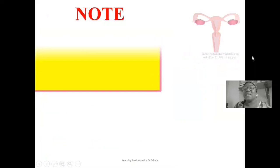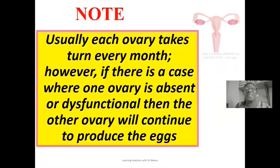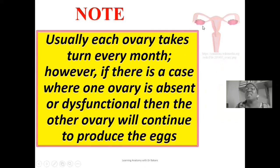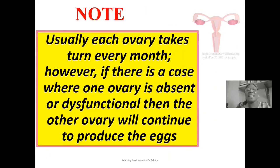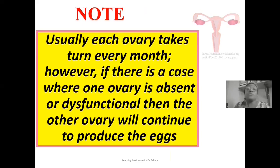We have two ovaries, so how does ovulation occur between them? Each ovary takes turns every month — in one month, one ovary produces the egg, and the following month, the other ovary takes over. However, if one ovary is absent, perhaps removed due to infection or other circumstances, or if there is a dysfunctional ovary, the remaining ovary will continue to produce the egg.